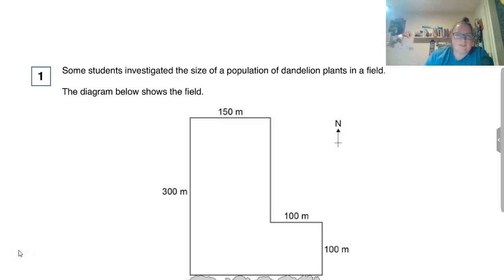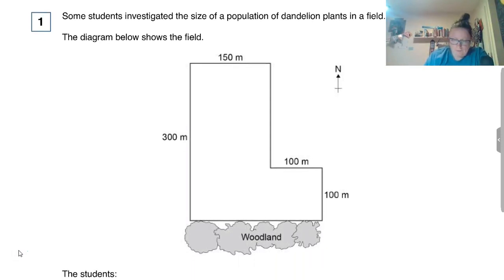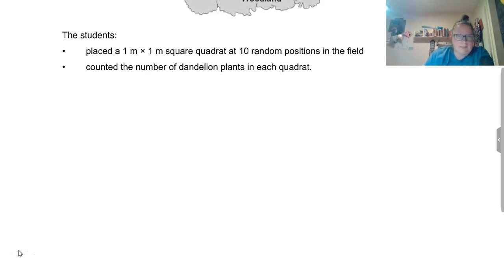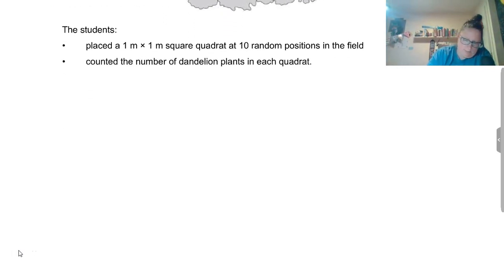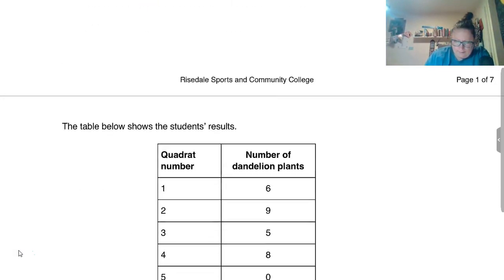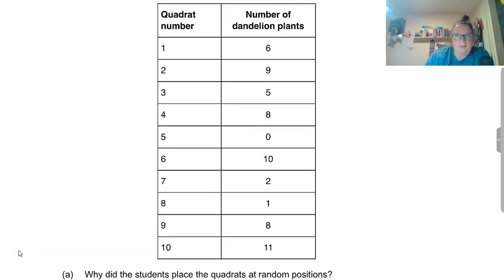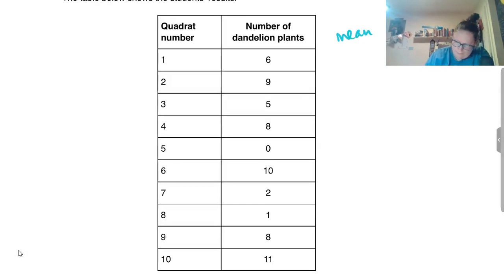This question I've chosen tonight is calculations quadrat investigation. Some students investigate the size and population of dandelion plants in the field. The diagram below shows the field. I imagine that later we're going to need to work out the area of this field so that we can use it in a calculation. The students used a one meter by one meter square quadrat and they did it in ten random positions. These are the results that they collected. We know that if we've done something ten times, we're probably going to have to work out a mean a bit later on.